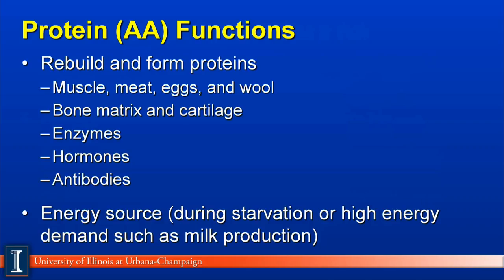Looking at proteins in terms of their functions in the animal's body, there are two major functions. The first is to build and form proteins: muscle, meat, eggs, wool, and milk are examples. Another function is the formation of bone matrix and cartilage. Enzymes are another important function to digest food, and hormones such as insulin and growth hormone are essential. Finally, antibodies, which are part of the immune system, represent a major function. A second use of proteins or amino acids is for energy, which occurs during starvation or high energy demands such as during milk production.